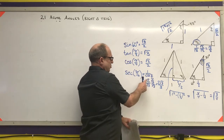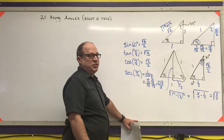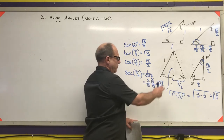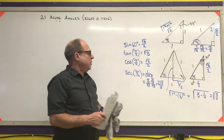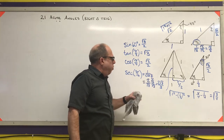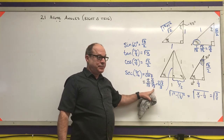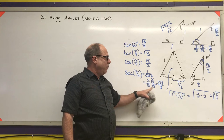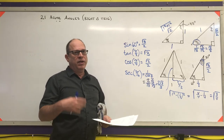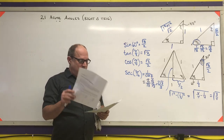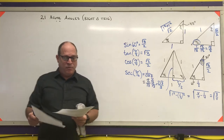If you type 2 over root 3 into your calculator, it gives you 2 root 3 over 3. Anytime you have roots in the denominator, we want to rationalize and get rid of those roots unless you're immediately going to do something that makes that moot.